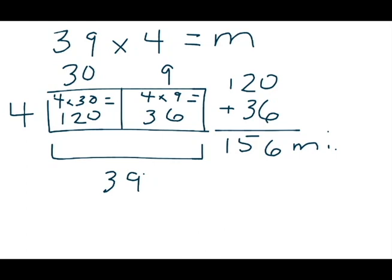So again, I'm going to show you a different way to partition this rectangle. But it's the same problem. Jake rode his bike four miles a day for 39 days. How many miles did he ride in all? So 39 times 4 is essentially what we're solving for. So I'm going to draw another rectangle here. I'm going to write a 4 over here.